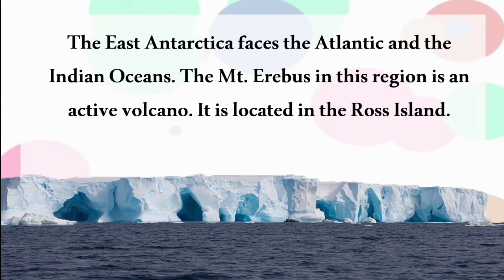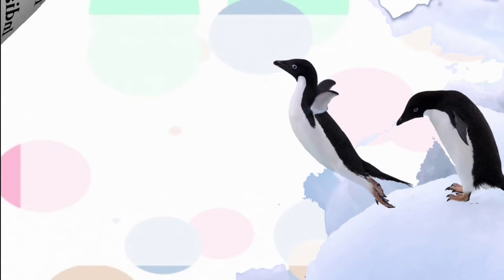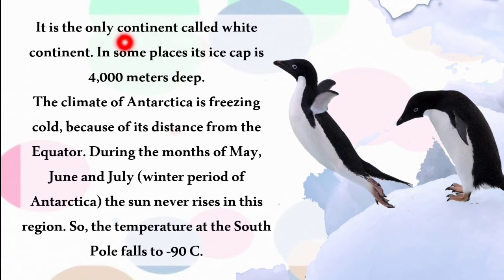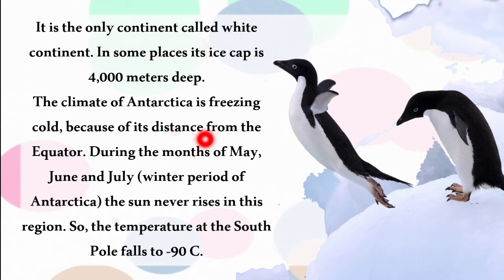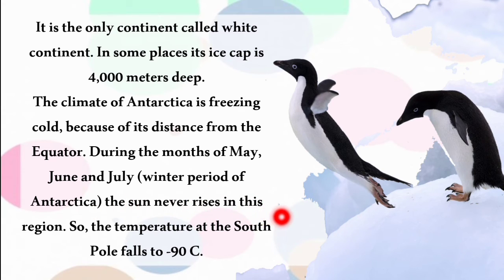Antarctica is the only continent called the 'White Continent'. In some places its ice cap is 4,000 meters deep. The climate is freezing cold due to its distance from the equator. During the winter months of May, June and July, the sun never rises, and the temperature at the South Pole falls to minus 90 degrees Celsius.